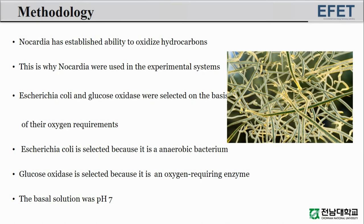Nocardia has an established ability to oxidize hydrocarbons, which is why Nocardia were used in the experimental systems. Escherichia coli and glucose oxidase were selected on the basis of their oxygen requirements. Escherichia coli is selected because it is an anaerobic bacterium, and glucose oxidase is selected because it is an oxygen-requiring enzyme.